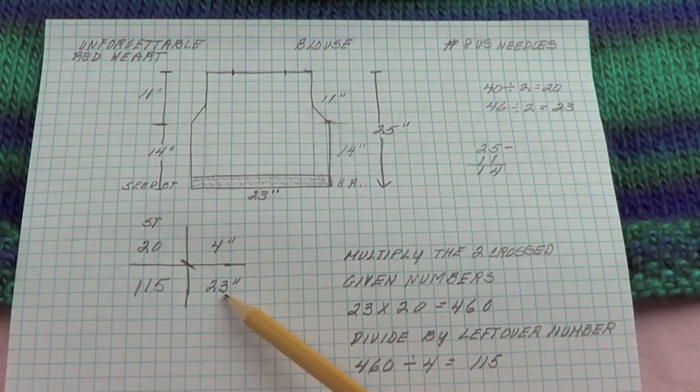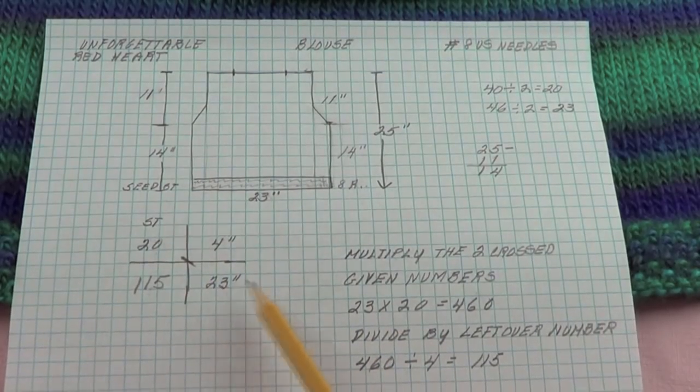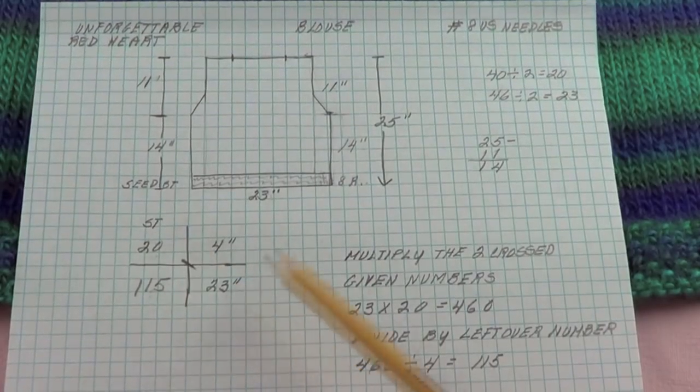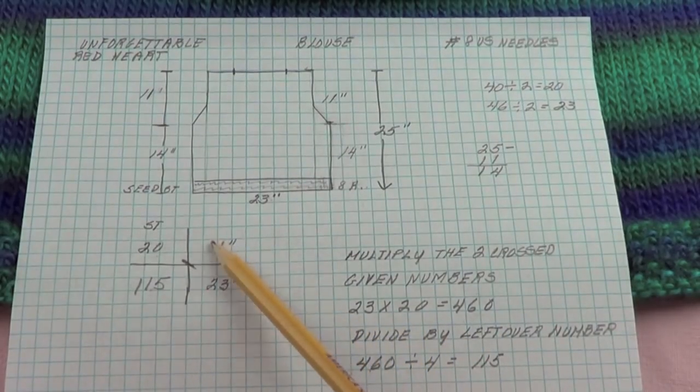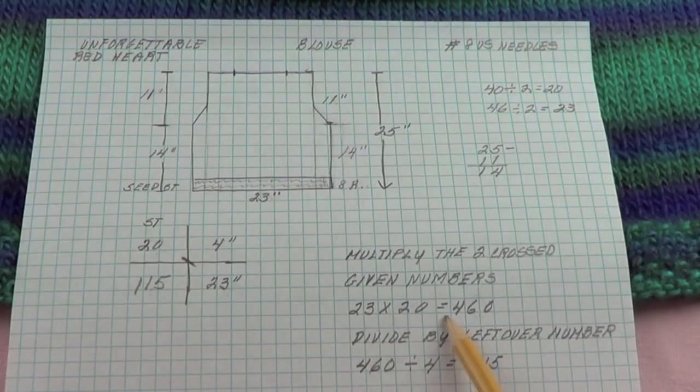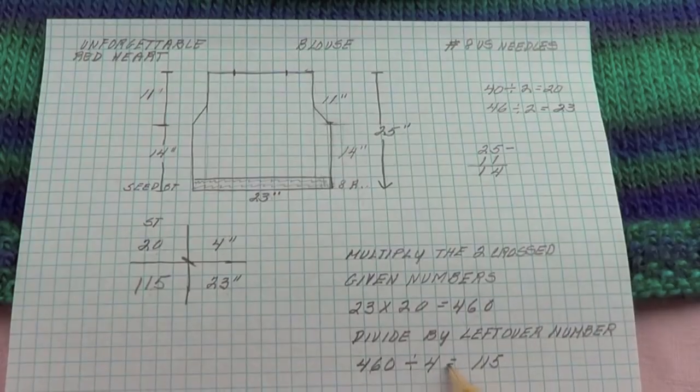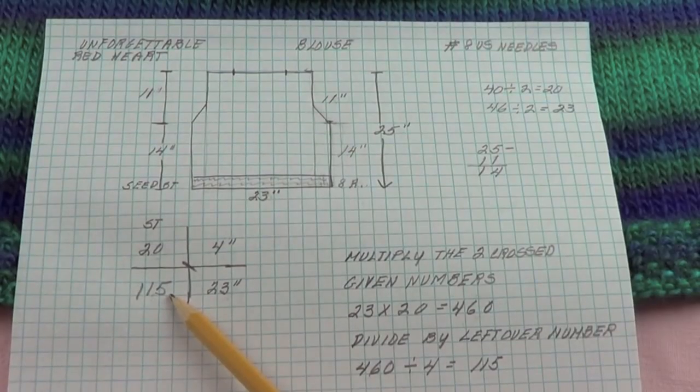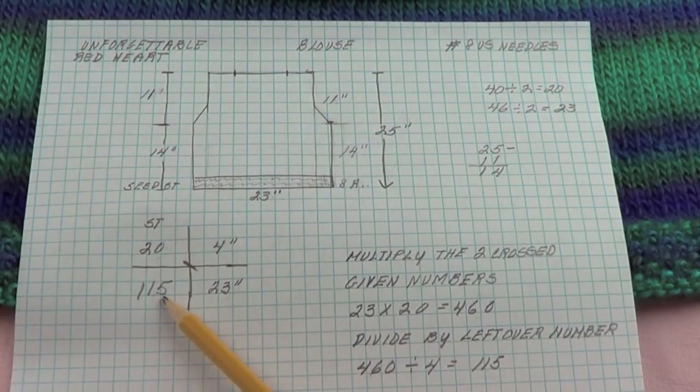So I multiply 23, which is this, times 20 because these are the two crossed given numbers, and that gives me 460. Then I divide it by the leftover number which is 4. So 460 divided by 4 is going to give me 115 stitches. So that's what I have here: I am going to cast on 115 stitches and that's how wide my sweater is going to be. And I already measured it because I'm starting to make it.